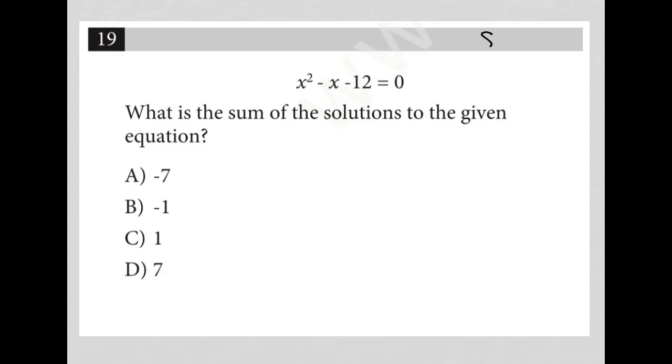This question is a simplify question. Simplify questions are usually very short, somewhere between 1 and 3 lines long, and they contain an equation or an expression. Our equation here is x squared minus x minus 12 equals 0.